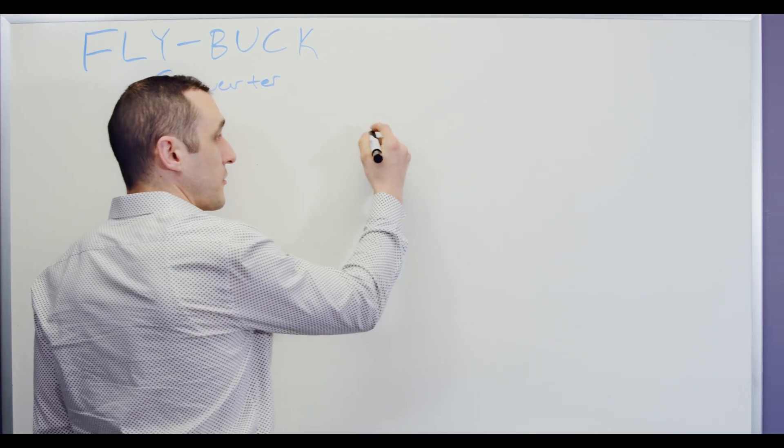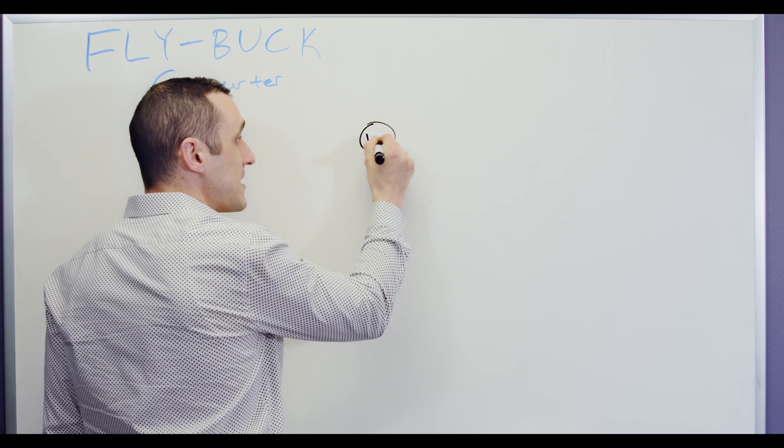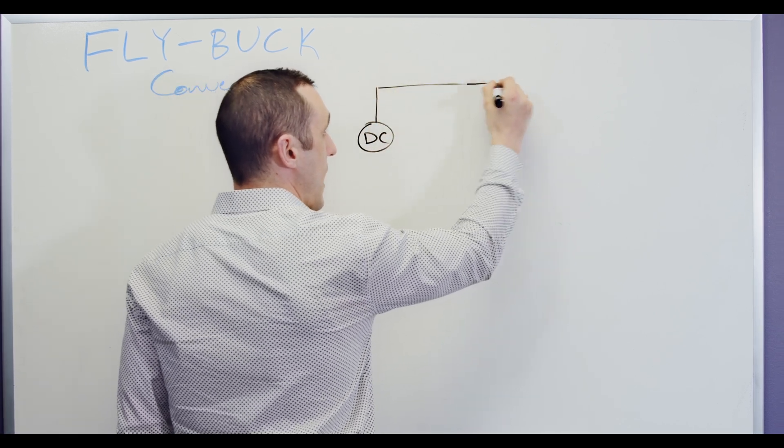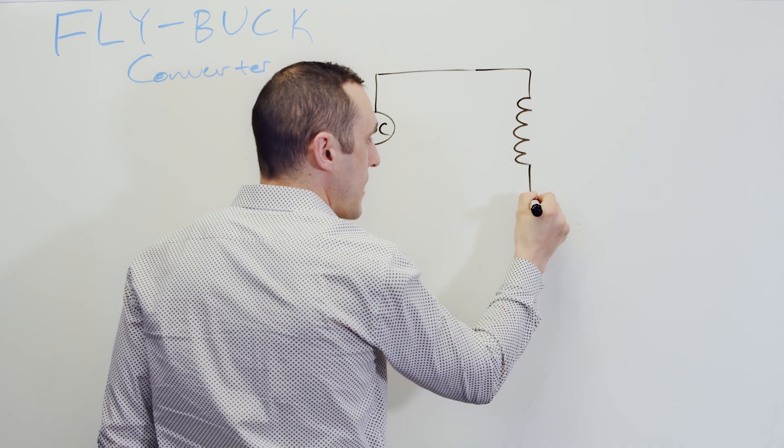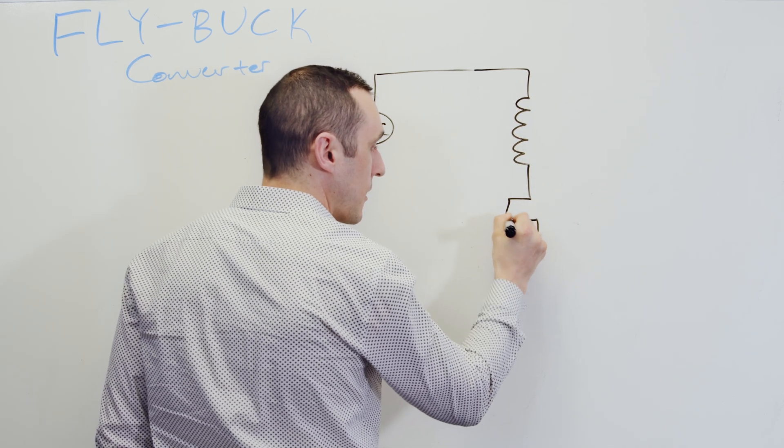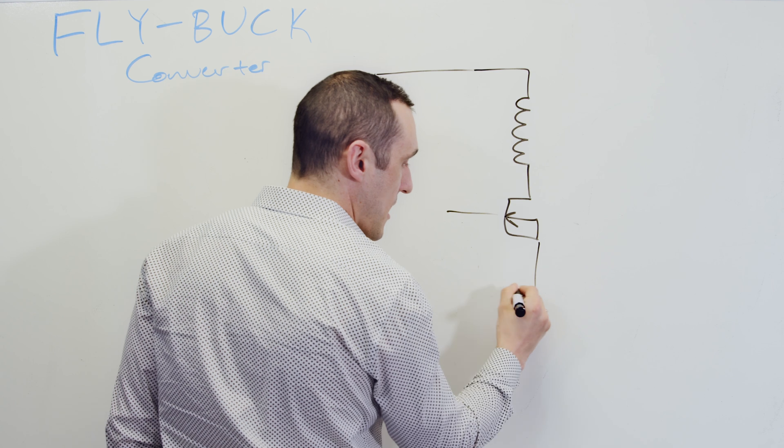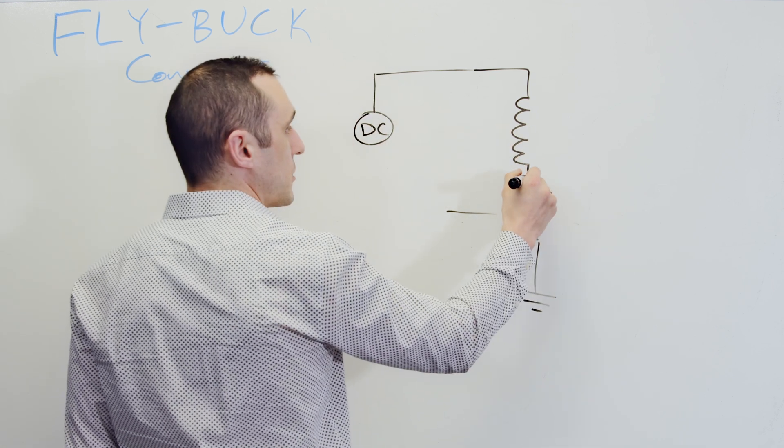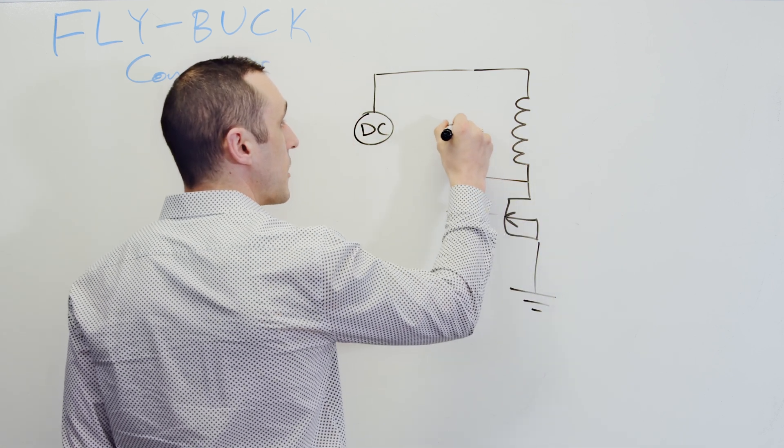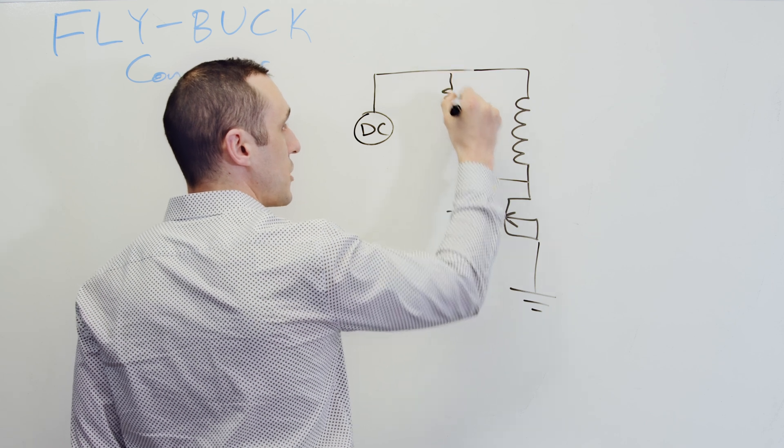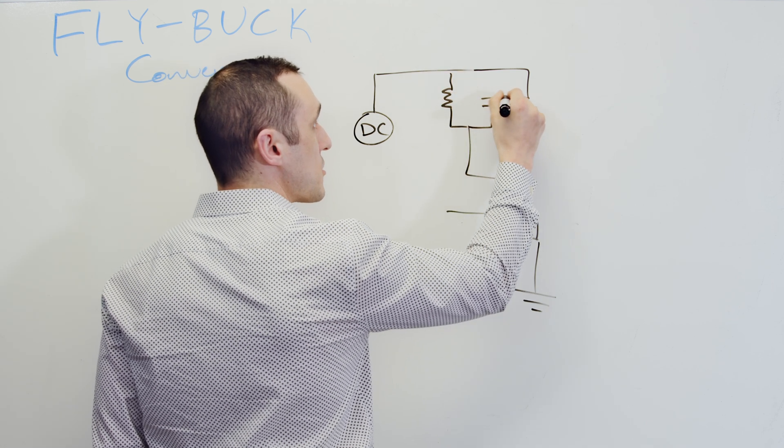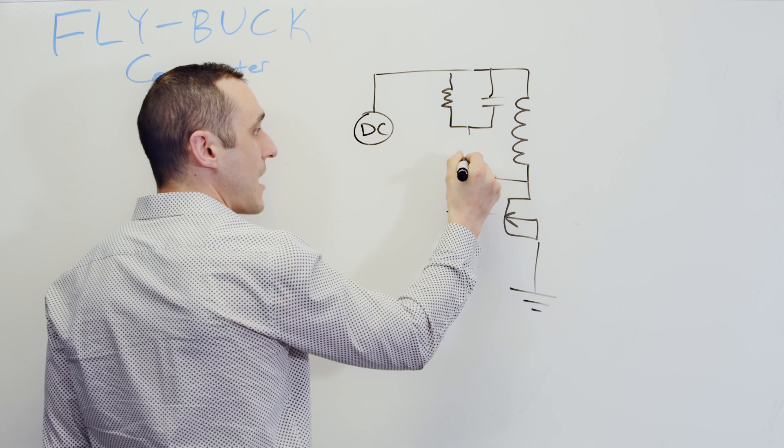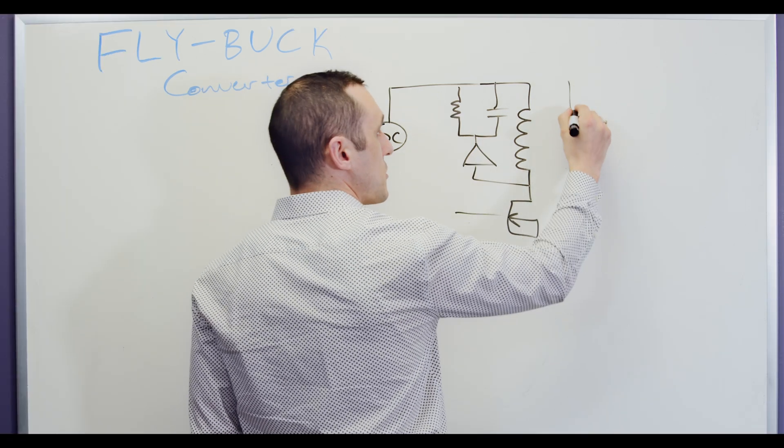So first with a flyback we have a DC input, we bring that over to a transformer, we have a FET here, and this then goes down to ground. We generally have a snubber here. The snubber is essentially just a parallel RC circuit with a diode here.